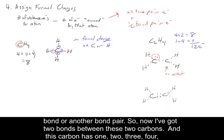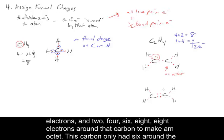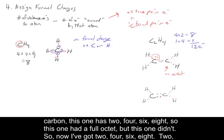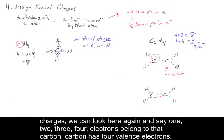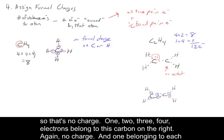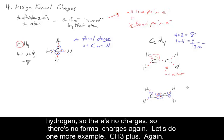Now with the double bond, this carbon has one, two, three, four electrons — and the other has two, four, six, eight. Both carbons now have a full octet and the molecule is stable. Looking at formal charges: one, two, three, four electrons belong to the left carbon — carbon has four valence electrons, so no charge. One, two, three, four electrons belong to the right carbon — again no charge. And one electron belongs to each hydrogen, so there are no formal charges anywhere in C2H4.